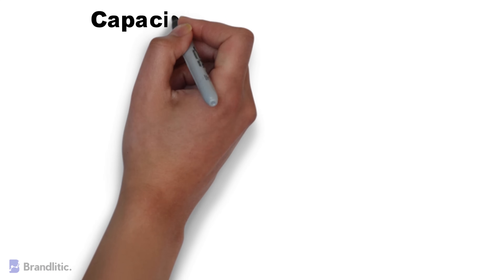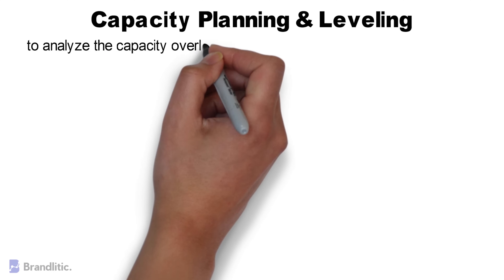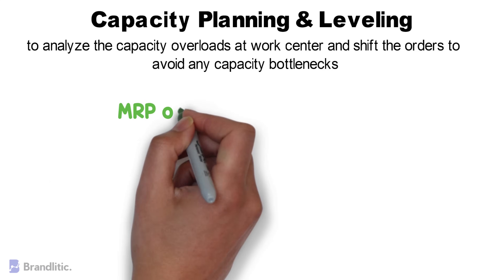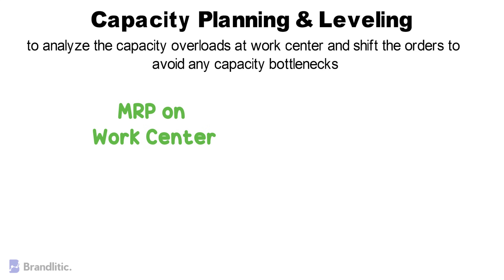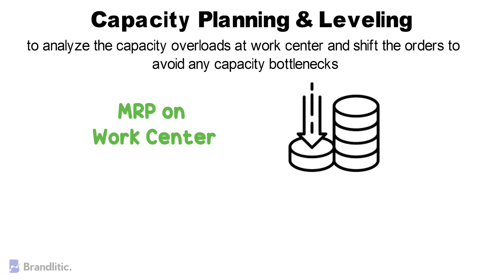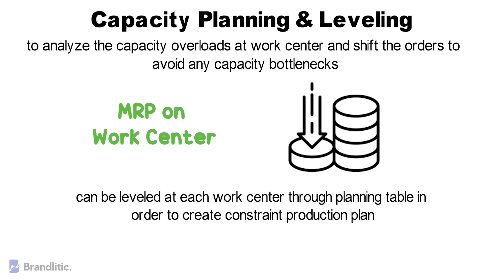Let's talk about capacity planning and leveling. Capacity planning is used to analyze capacity overloads at work centers and shift the orders to avoid any capacity bottlenecks. The capacity requirements are generated by MRP on work centers, and since MRP works on infinite capacity and plans everything without considering any capacity constraints, it is required to level the capacity at work centers. The capacity can be leveled at each work center through a planning table in order to create a constrained production plan.